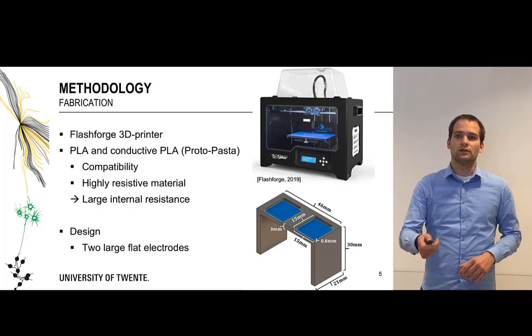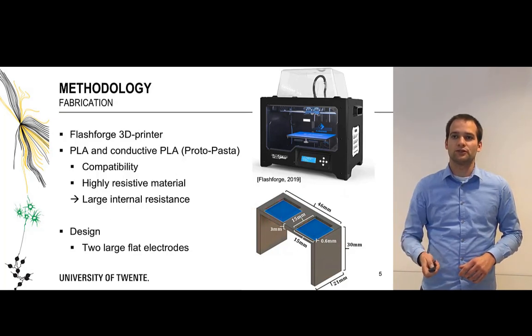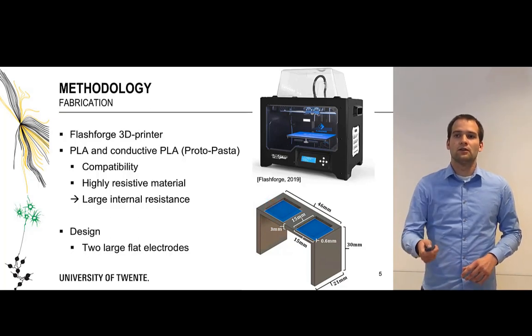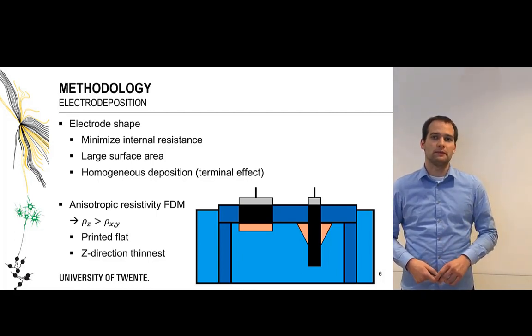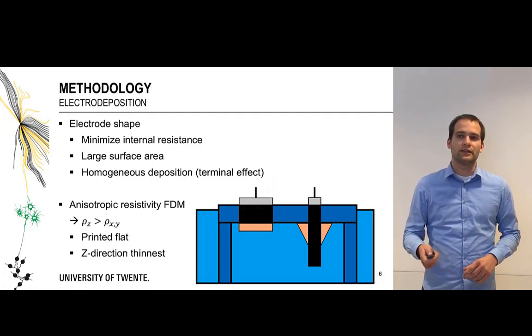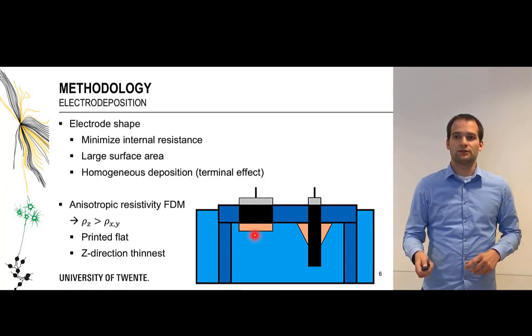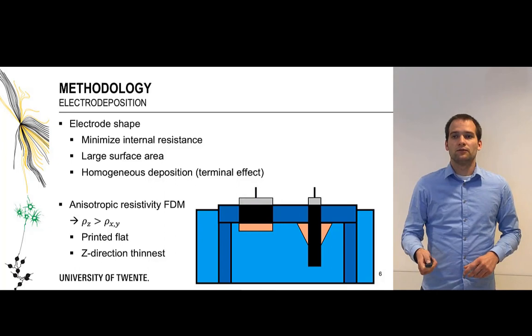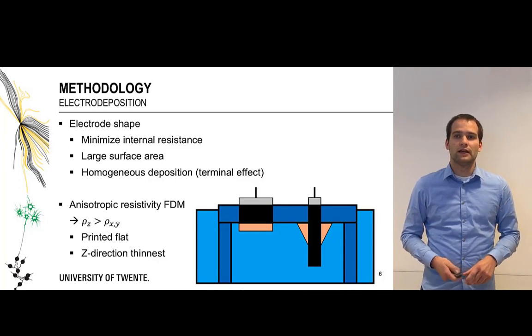For the design we've chosen a simple bridge like design, two pillars with a horizontal section with two large flat electrodes touching the electrolyte. We've come to this design mainly to minimize the internal resistance since the electrodes have quite a high resistance. We've taken them as thin and as wide as possible so that the resistance in the z direction from the metal in the electrolyte to the current collector is as low as possible. Furthermore they have a large surface area so a lot of metal can be deposited on a single electrode.